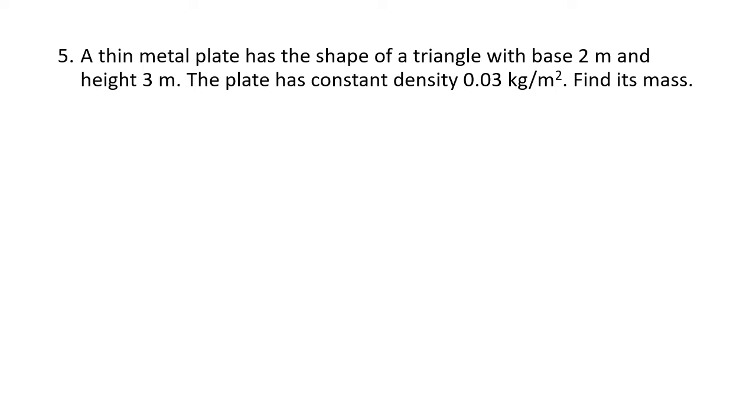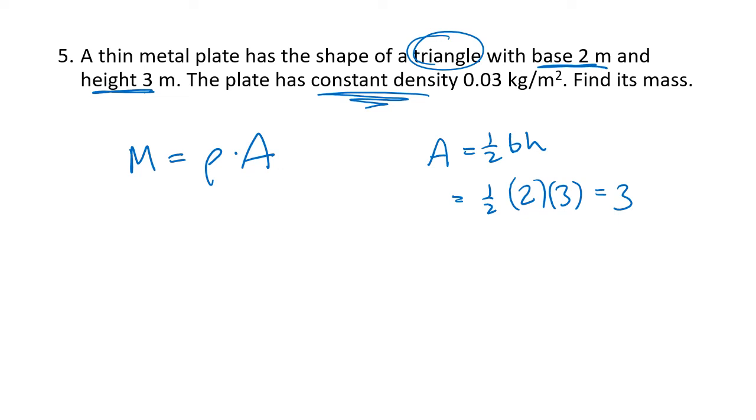Now these last couple of problems just relate to the idea that when density is constant, we don't have to do an integral. So the only reason why we have to do an integral in some of these previous problems is when the density varies based on where you are in the object. But we're told in this case that this has constant density, 0.03 kilograms per square meters. So all we need to do is find the area, and the mass is going to be that constant density rho multiplied by the area. Since it's a triangle with base 2 and height 3, area is going to be 1 half base times height, which will be 1 half, base is 2, height is 3, 1 half times 2 is 1, 1 times 3 is 3, and this will be square meters. My density was 0.03 kilograms per square meter. My area was 3 square meters. The square meters go away, and I just get 0.03 times 3, which is 0.09 kilograms. No integral needed.